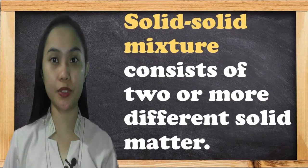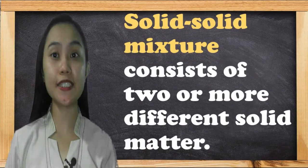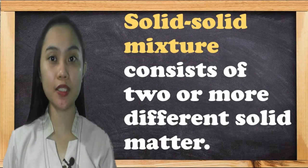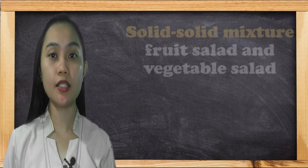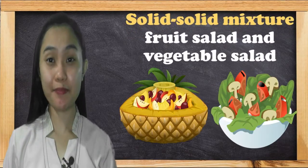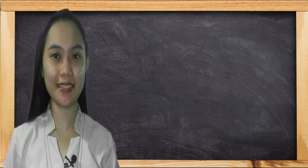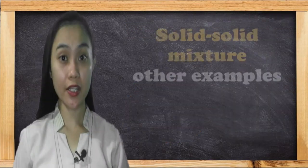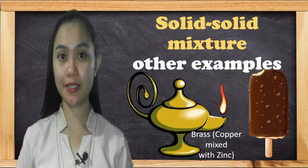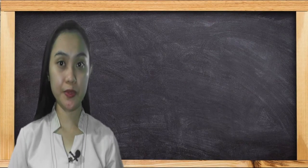Number 1: Solid-solid mixture consists of two or more different solid materials, such as fruit salad and vegetable salad. These are other examples.